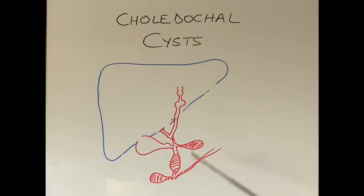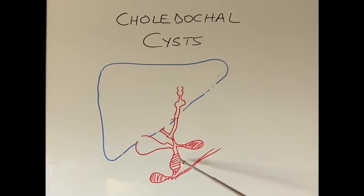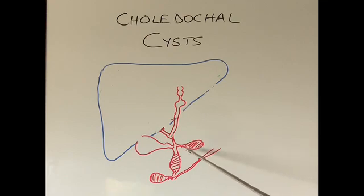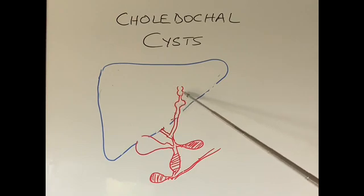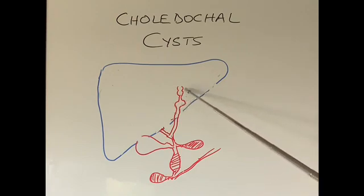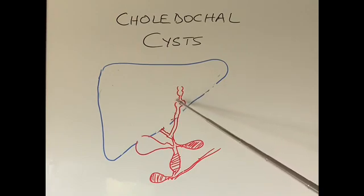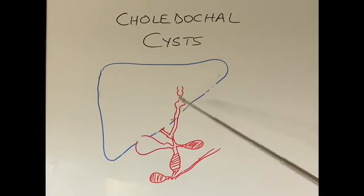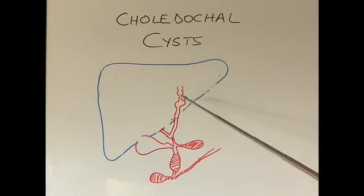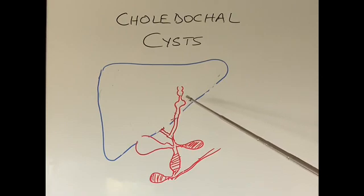There are many different varieties of choledochal cysts. In one type, part of the bile duct is dilated. In another, a different section of the bile duct is dilated. In another variety, there is a little pocket coming out of the side of the bile duct. And in another patient, there are bead-like dilatations inside the liver, called Caroli's disease. All these conditions can give rise to infection because the bile cannot flow easily — it collects, stays there, and rots, causing infections.